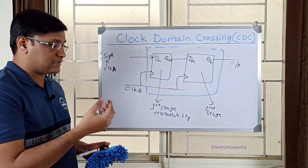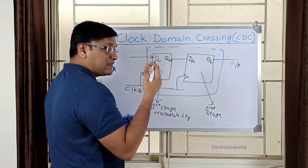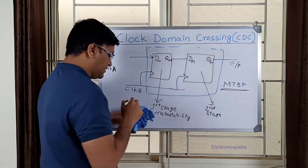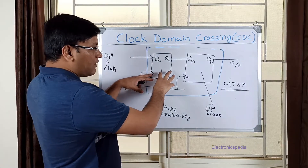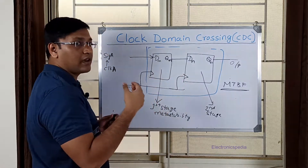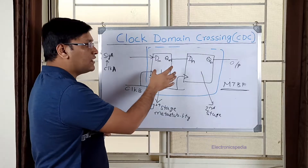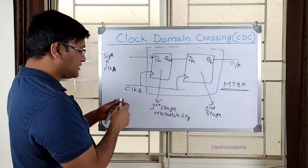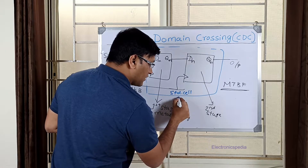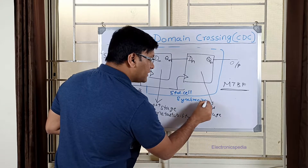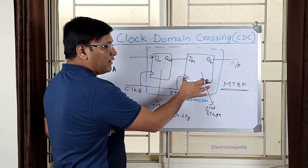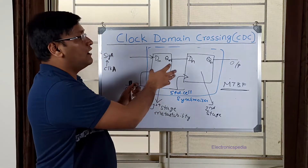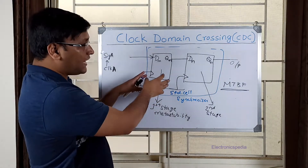In my previous video I explained metastability and the concept of MTBF — Mean Time Between Failures. What you should understand is that when implementing back-to-back flops for a synchronizer, it shouldn't use regular flops as written in normal code. Instead, these synchronizers should be standard cell synchronizers. What I mean by standard cell synchronizer is that these flops should be placed close to each other in physical implementation.